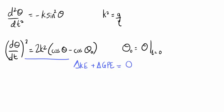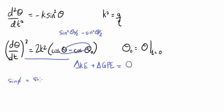At this point, things get tricky. By noting that we can rewrite this part of the expression as sin squared theta 0 over 2 minus sin squared of theta over 2, and by making the substitution sin phi equal to the ratio of the half angle sines, it's possible to rewrite the problem in the form given here.